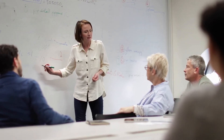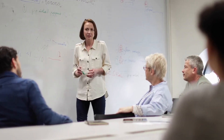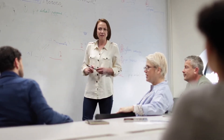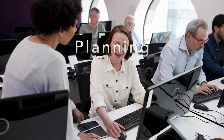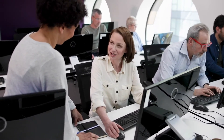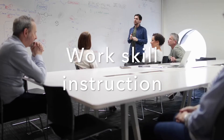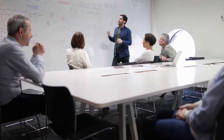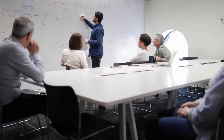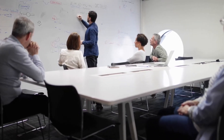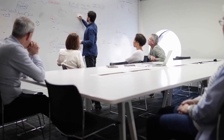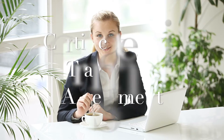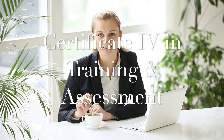The ETAS is focused primarily on assessment, with three of the four units that make up the skill set being concerned with planning assessment, assessing competence, and validating assessment. The fourth unit provides training in work skill instruction. The skill set is designed for trainers and assessors who deliver non-accredited training or work with other trainers delivering nationally accredited training. All four units can contribute towards the achievement of a Certificate IV in training and assessment.